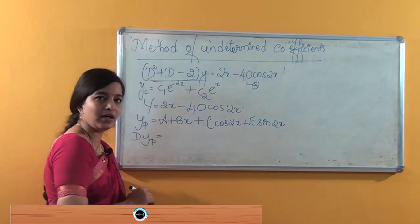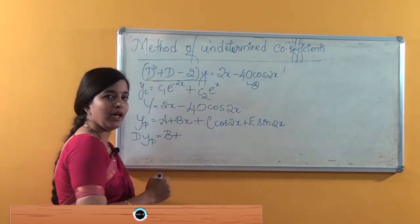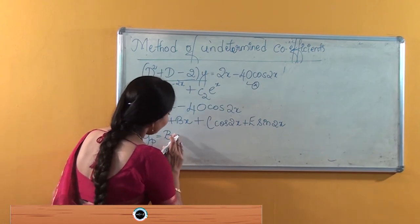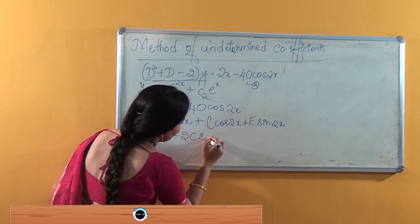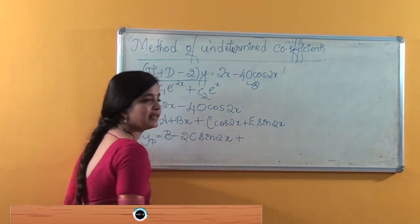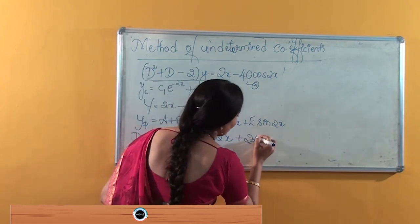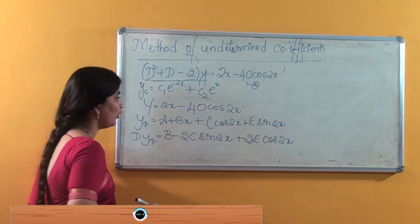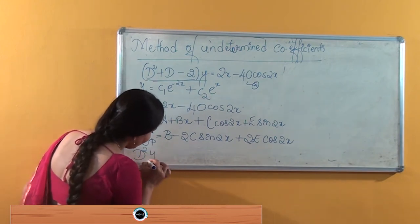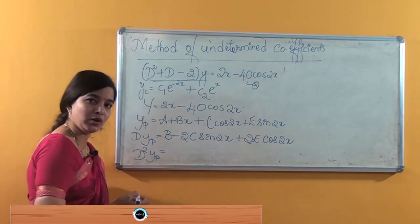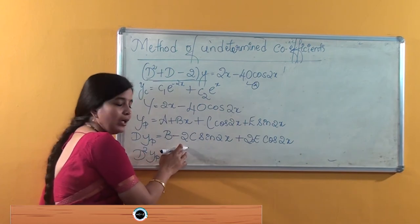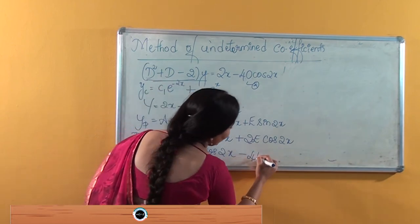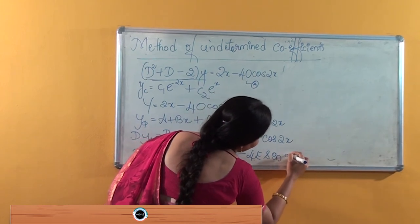Differentiating yp, since a is a constant it drops out. We get dyp equal to b minus 2c·sin(2x) plus 2e·cos(2x). Differentiating again, d²yp gives us minus 4c·cos(2x) minus 4e·sin(2x).